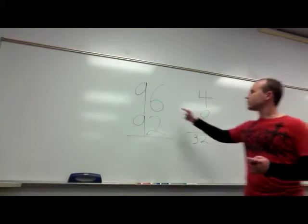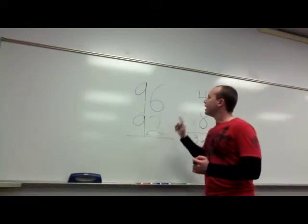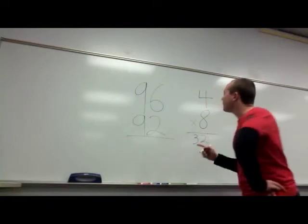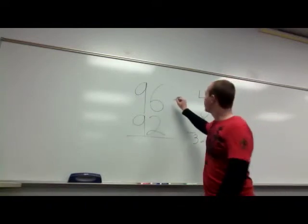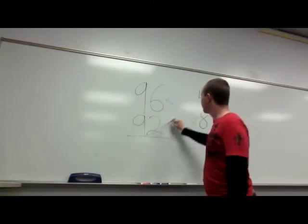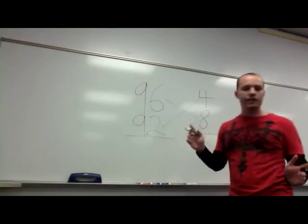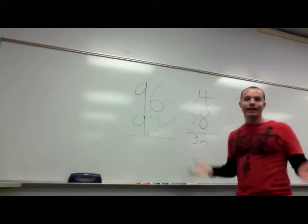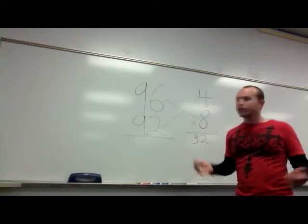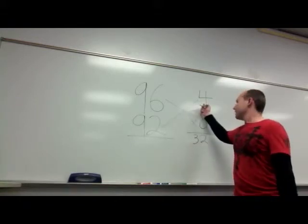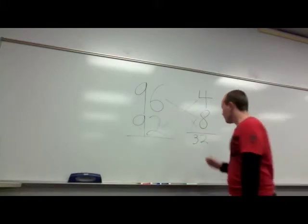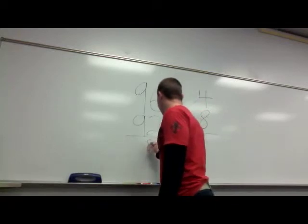Now I need to come back to this equation over here, and I need to say, hmm, wait a second. If I cross-subtract 96 take away 8, or 92 take away 4, I get the same answer. 92 minus 4 is 88, 96 minus 8 is 88. So I can just write 88 off to the side here.